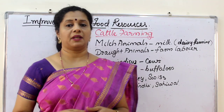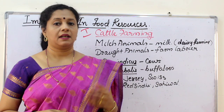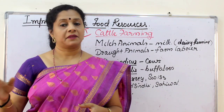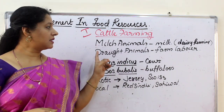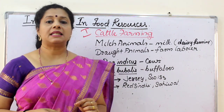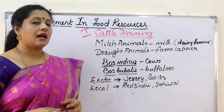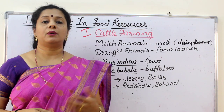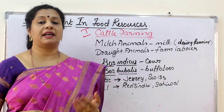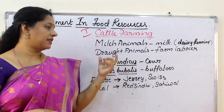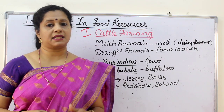We are first discussing cattle farming or dairy management. Cattle are used for two purposes: either for milk or for doing farm labor. Based on that, we categorize them into two categories. First is milch animals — females which yield milk, used in dairy farming. Whereas males used for farm labor are beasts of burden used for tilling, irrigation, and cutting, and they come under the category of draft animals.